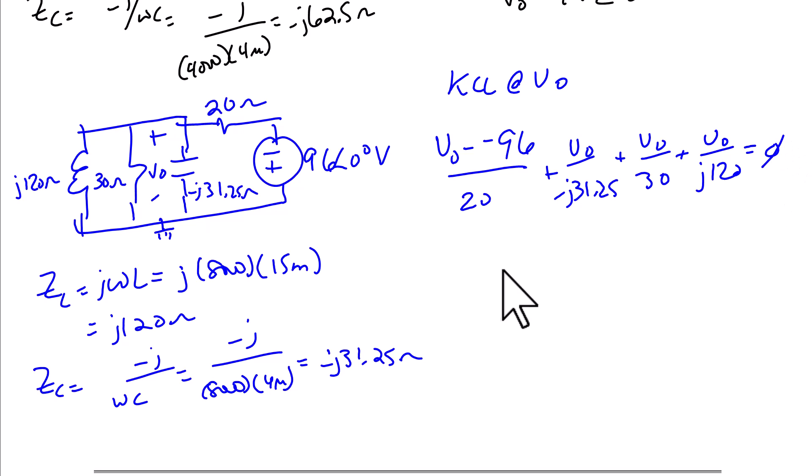And so next, we're going to solve for V0. And when you solve this equation, you get that V0 is equal to 55.4 with an angle of 164.1 degrees.